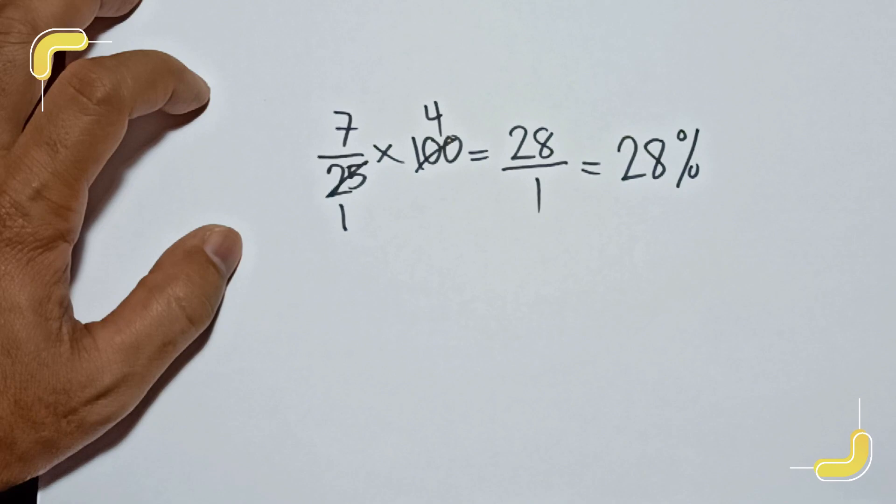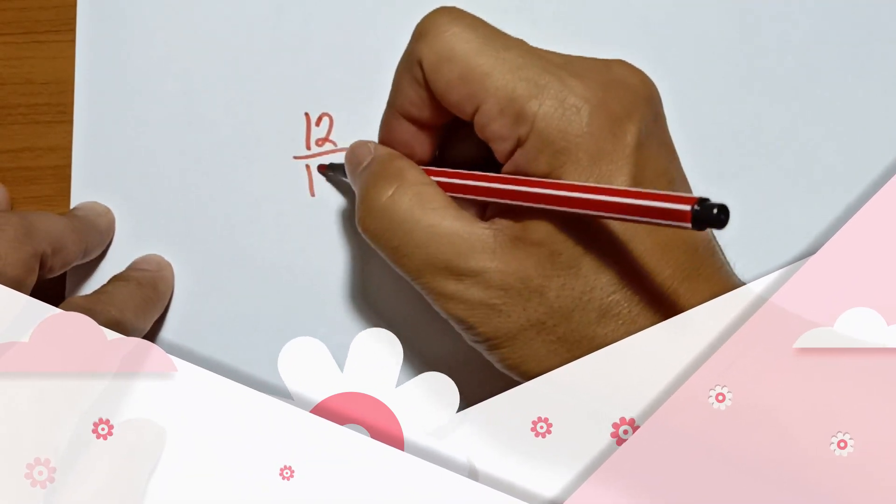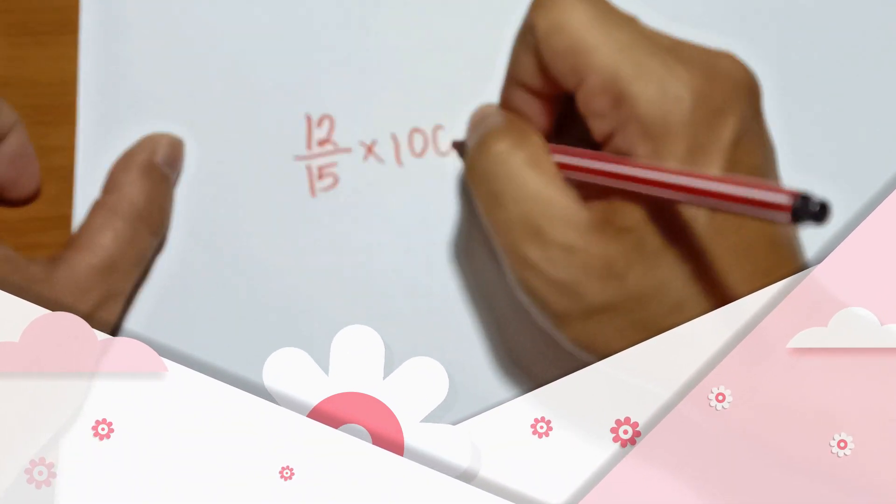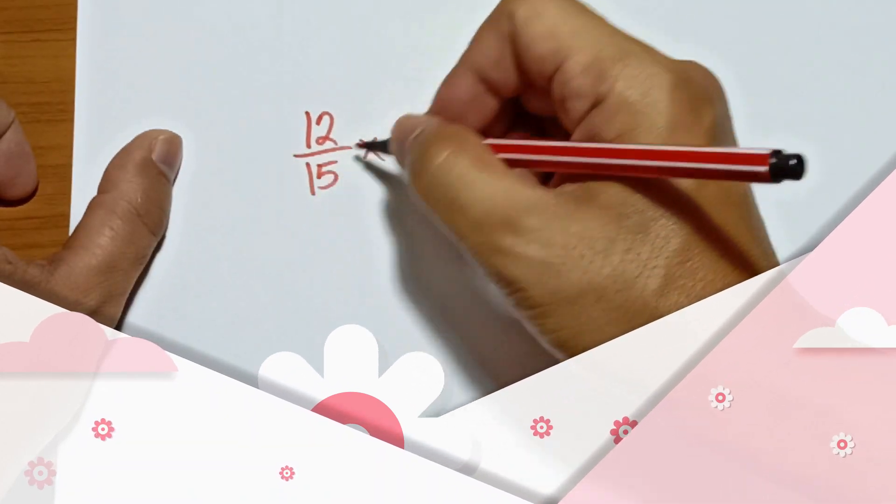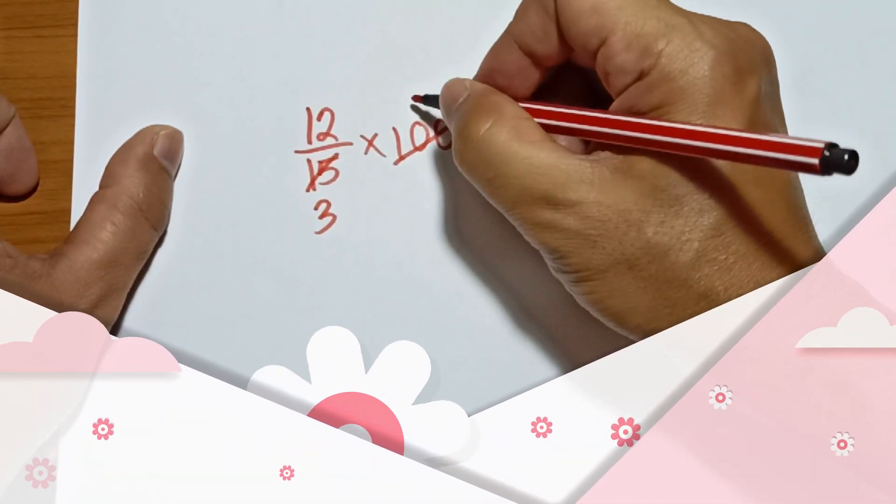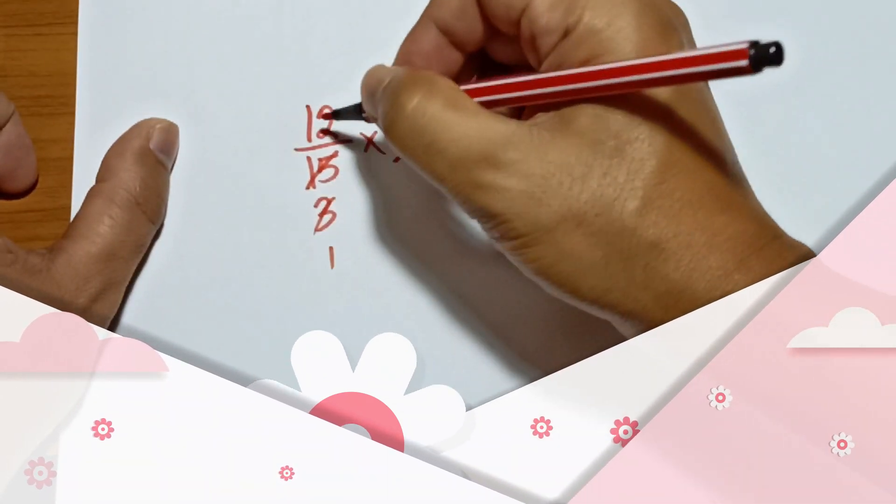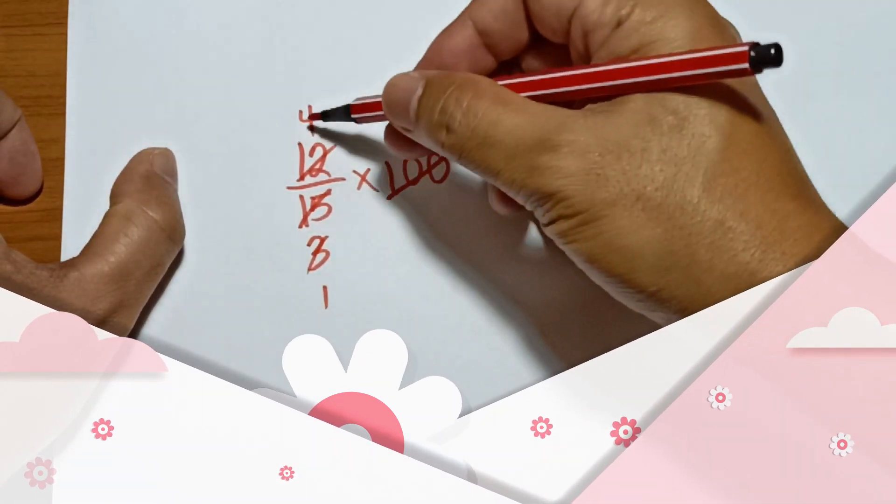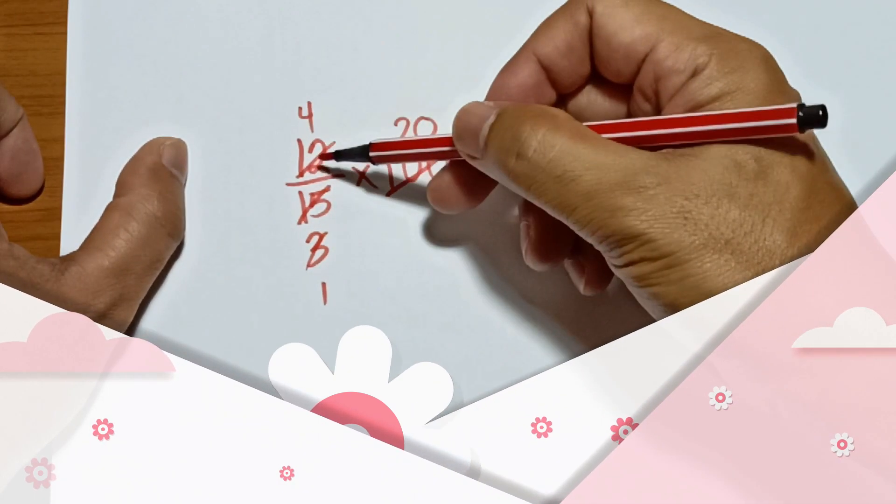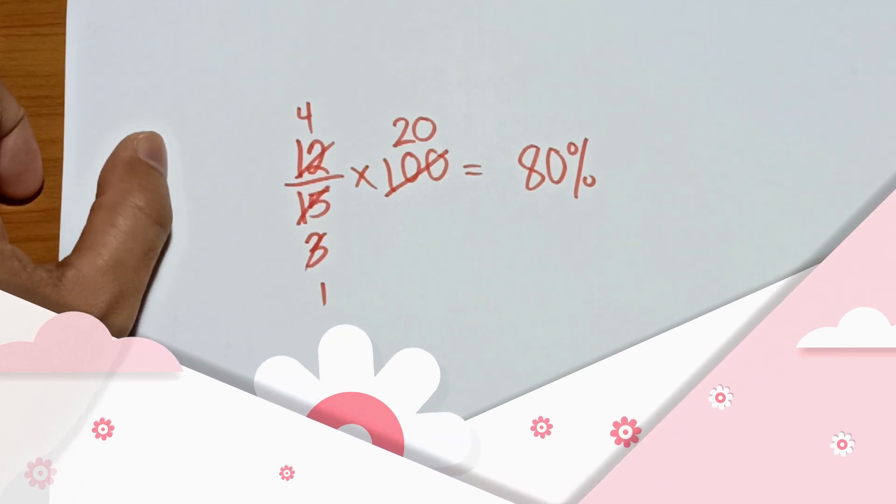For the last example, if you have 12 over 15, to convert this fraction into percentage, multiply by 100. As you can see, 15 is divisible by 5, so 15 divided by 5 is 3, and 100 divided by 5 is 20. Then 12 and 3 are divisible by 3: this is 1, this is 4. And then 4 times 20 is equal to 80 percent. Therefore, 12 over 15 is equal to 80 percent.